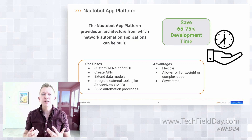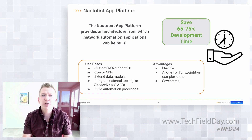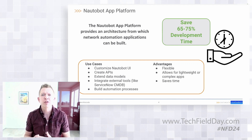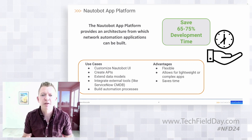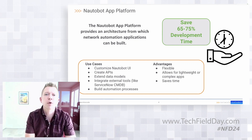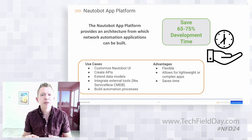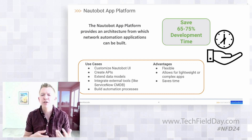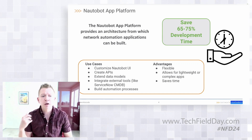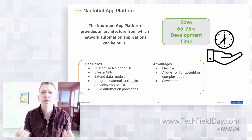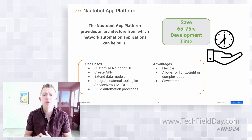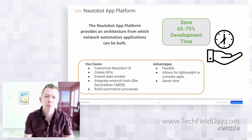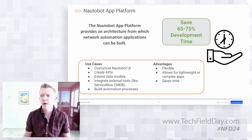The app platform is intended to be an architecture on which we can build applications, and our goal is to save time for development so that the framework provides the methodologies you need and you can reuse tooling to more rapidly deploy functionality. It's highly flexible — we can have lightweight applications interacting with small components or simply extending the Nautobot UI, all the way up to complex apps integrating with external tools like the ServiceNow CMDB or other automation processes, all with the goal of faster time to deployment and getting back to running and operating production-scale networks.